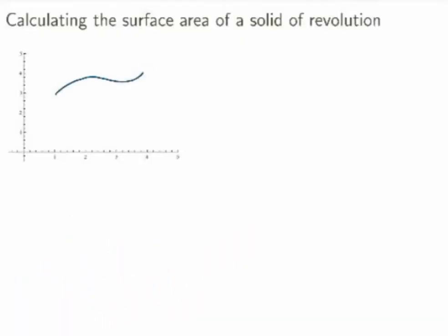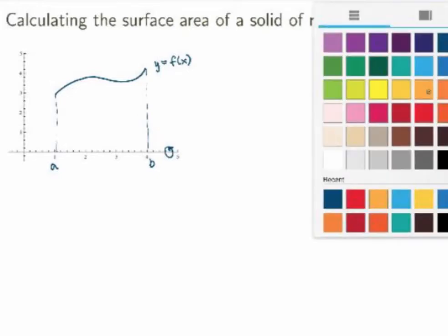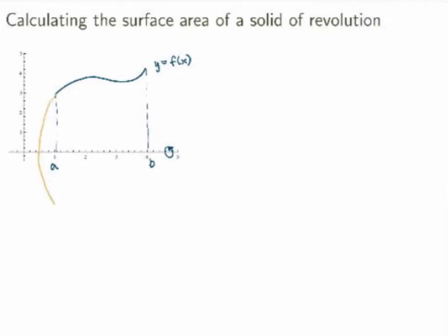Suppose I have a curve y equals f(x) and I look at the curve between two points x equals a and x equals b. Now consider the case where I'm rotating this curve about the x-axis. I'll end up with some sort of solid of revolution. Now suppose I'm not interested in calculating the volume of the solid but rather the surface area — the area of the surface all around the solid.